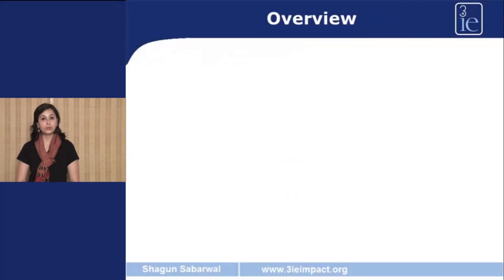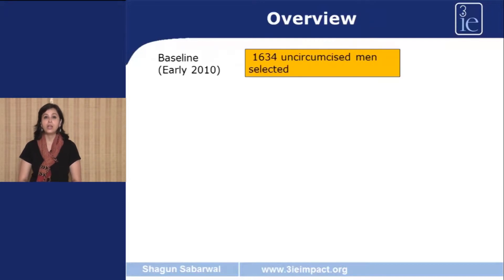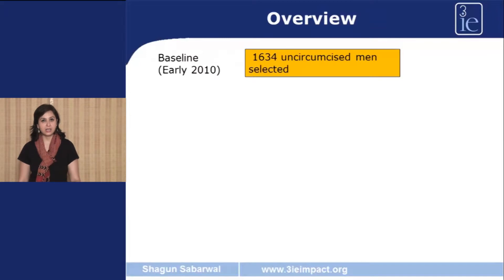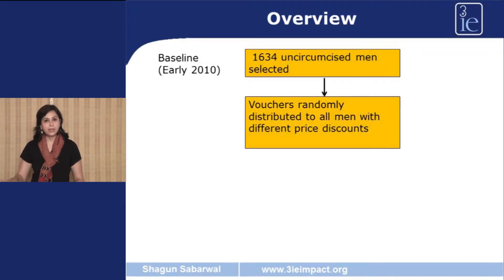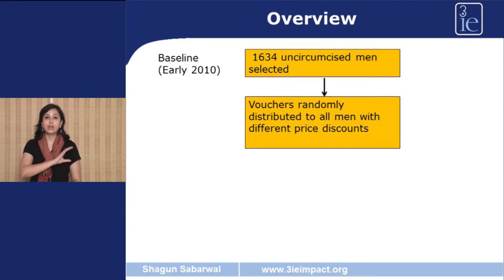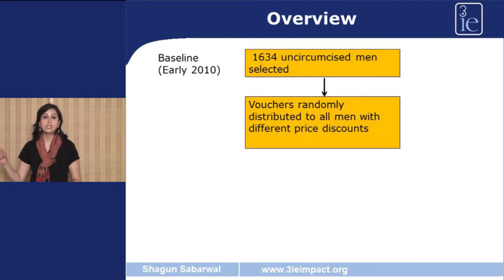I would like to give you an overview of the randomization and the study rollout. The first thing that was done was that 1,634 uncircumcised men were selected to be part of the study. With these men, a baseline survey was administered, which essentially asks questions on some important factors and outcomes before the study starts — you want to know the status of the study population before the program was rolled out. Once the baseline survey was conducted, all 1,634 men were then given discount vouchers randomly. The value of these discount vouchers varied — someone could get a discount of 100%, meaning the procedure was absolutely free, and someone could get as low as 50 Malawian Kwacha.